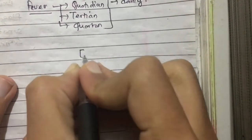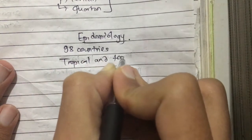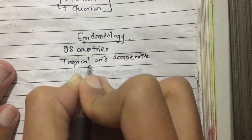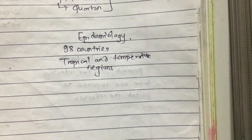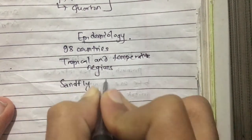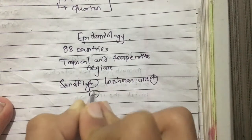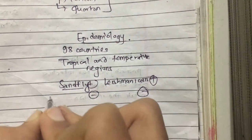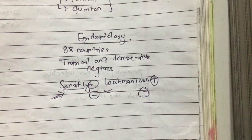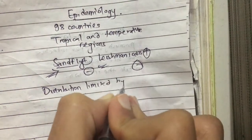Let us talk about the epidemiology of leishmaniasis. Leishmaniasis is found in 98 countries of the world. It is mostly found in tropical and temperate countries, and the distribution of leishmaniasis is limited by the distribution of the sandfly vector. If the sandfly is present, leishmaniasis is present; if the sandfly is absent, leishmaniasis is absent.